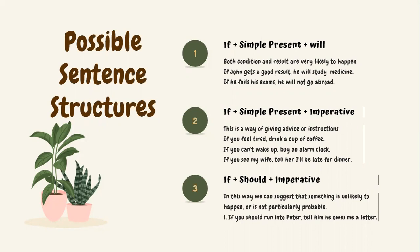Here are the possible sentence structures. First: if plus simple present plus 'will' — both the condition and result are very likely to happen. For example: 'If John gets a good grade, he will study medicine'; 'If he fails his exams, he will not go abroad.' Second: if plus simple present plus imperative — used for giving advice or instructions. For example: 'If you feel tired, drink a cup of tea'; 'If you see my wife, tell her I'll be late for dinner.'